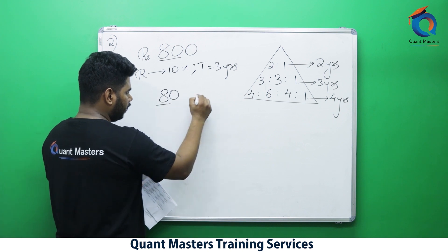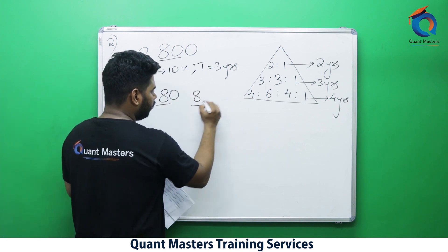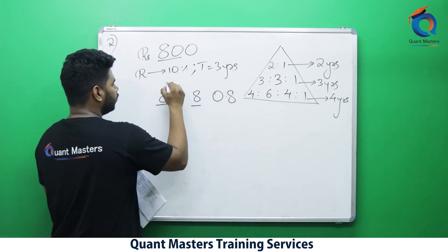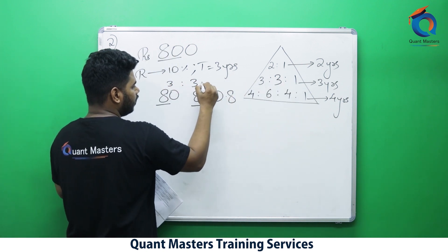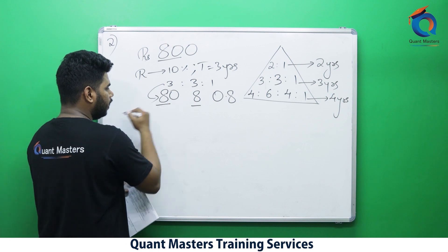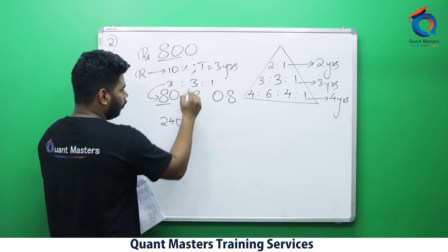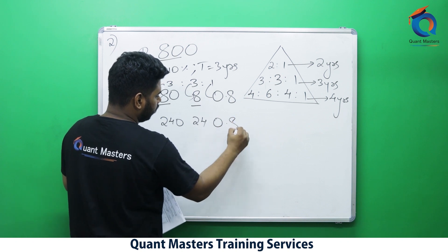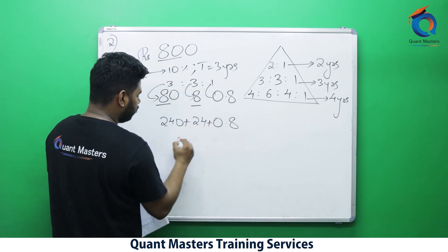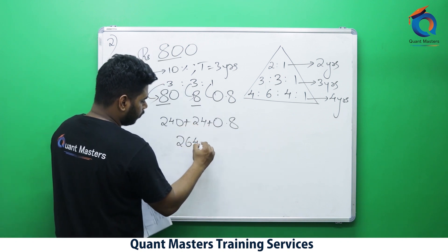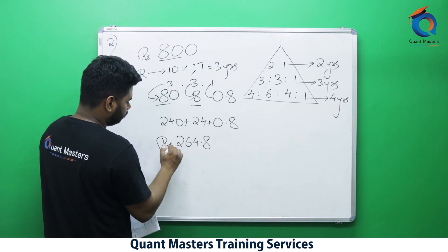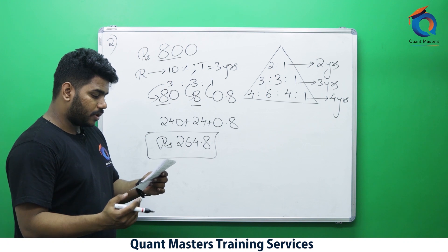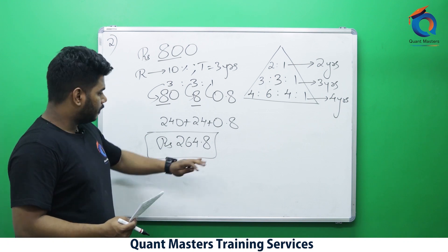For 3 years the ratio is 3:3:1. So: 3 × 80 = 240, 3 × 8 = 24, and 1 × 0.8 = 0.8. Total compound interest = 240 + 24 + 0.8 = 264.8 rupees. The answer is option B.